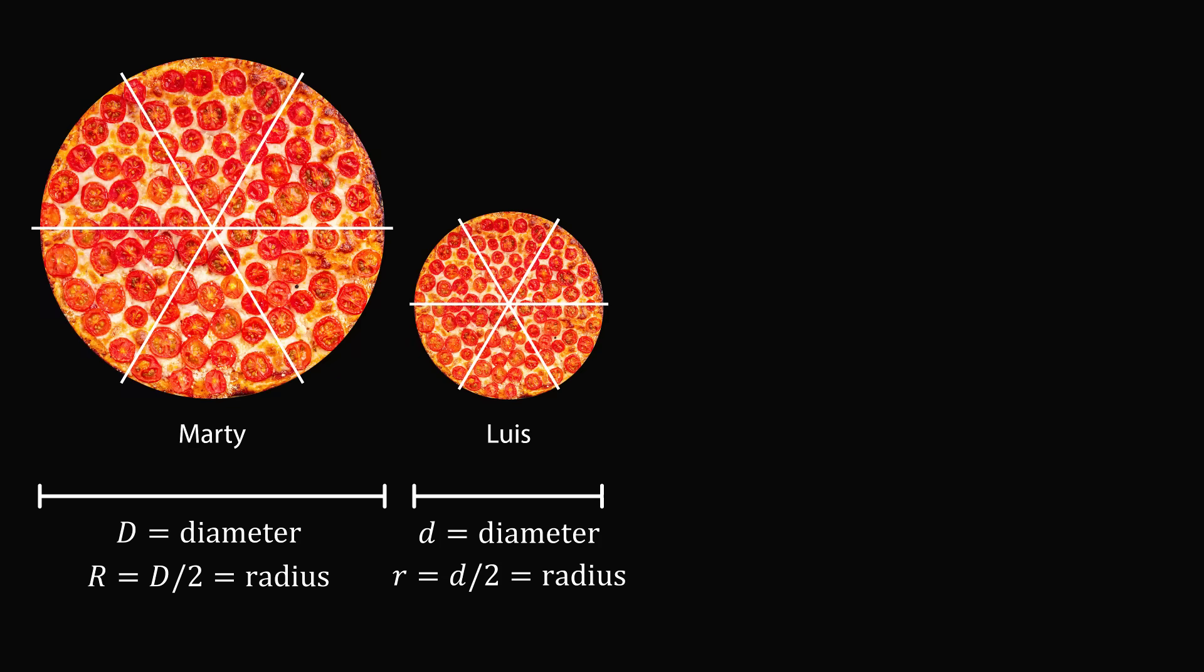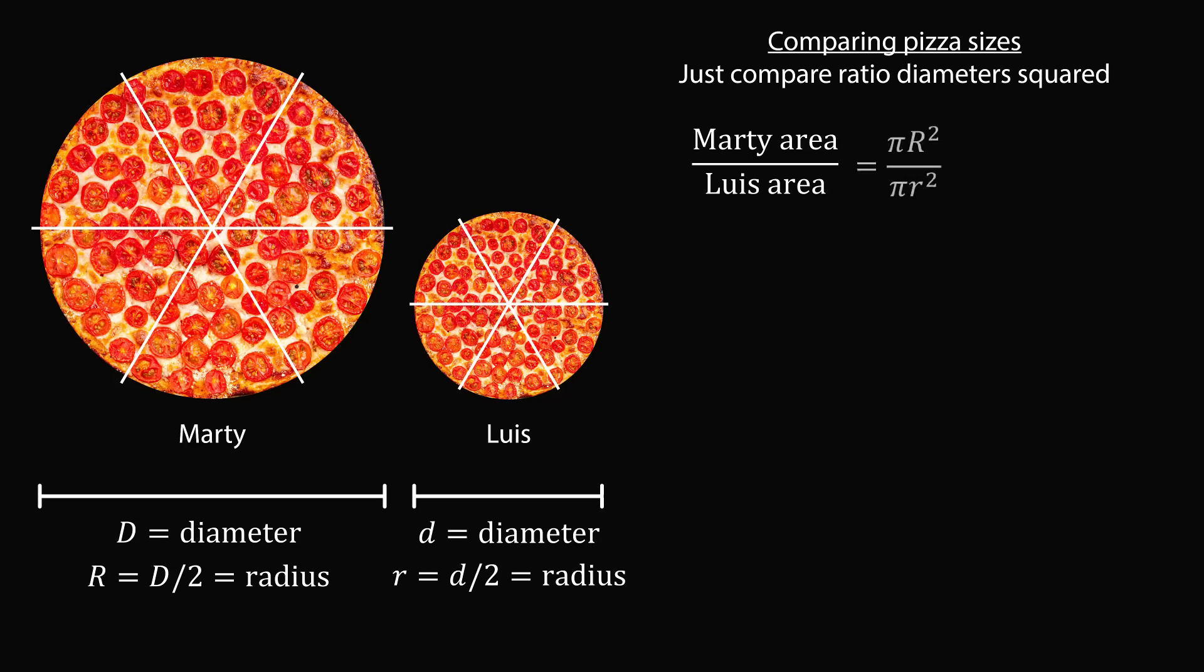Now while we're on the topic of pizza, I want to share another interesting little tidbit. You can compare pizza sizes just by comparing the ratio of their diameter squared. This is convenient because pizzas are often quoted in terms of their diameter size. So let's see why this is true. So let's compare Marty's pizza's area versus Luis's pizza area. So we have pi multiplied by big R squared divided by pi multiplied by little r squared. The pi terms will cancel out. So we just have the squared ratio of the radii. Each radius is equal to its diameter divided by 2. So when we square this out, we end up with d squared divided by 4 divided by little d squared divided by 4. The 4s will cancel out. So we just end up with the ratio of the diameter squared. So it's a very convenient way that we can compare pizza sizes. You don't have to worry about multiplying by pi and you don't have to worry about converting the diameters into radii. You just compare the square of the ratio of the diameters.